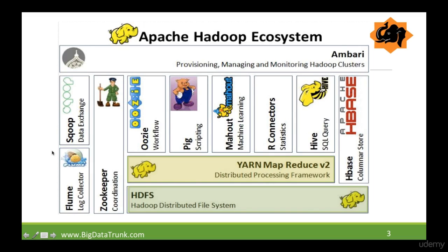For data to be brought into Hadoop, we need mechanisms to do that, and that's where Sqoop and Flume come into picture. Sqoop is a mechanism to get data from relational databases like Oracle, SQL Server, MySQL, etc. It not only acts as a mechanism to get data into Hadoop but can also be used to get data out of Hadoop into any relational system. Sqoop has an import and export utility which helps us do this two-way bridge. The word Sqoop is created by the combination of two words: SQL plus Hadoop — the SQ part comes from SQL and the OOP part comes from Hadoop.